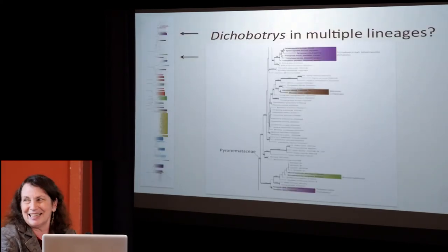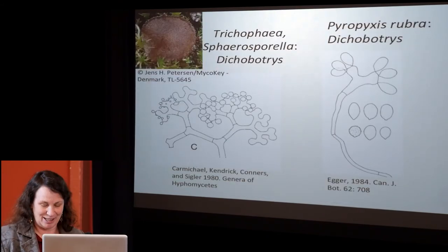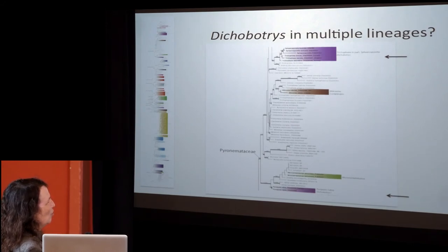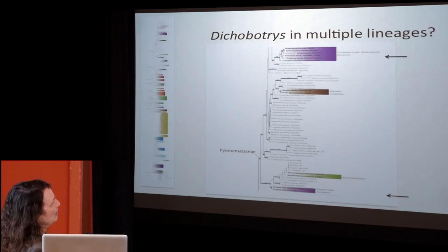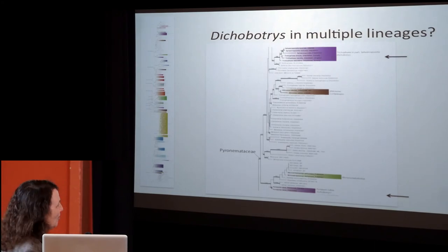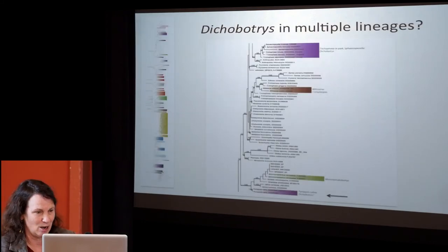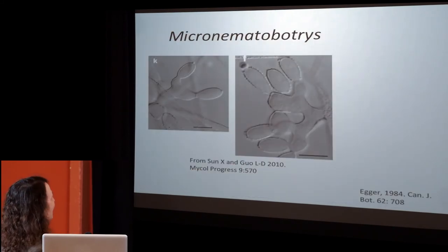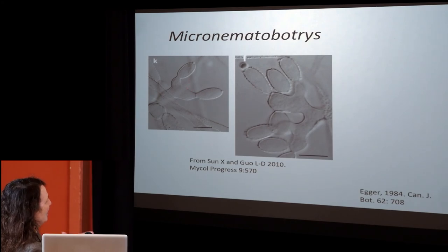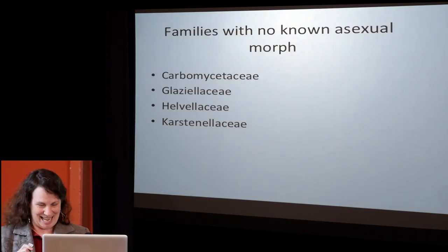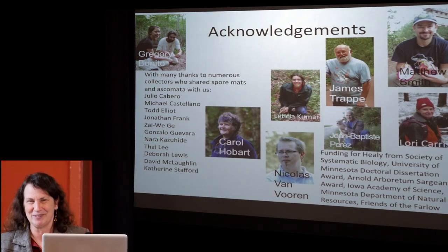There was a question about whether Dicobotris could be in two disparate lineages — one producing Trichophea or Trichophea spherosporella, and the other having Pyropixis. Trichophea spherosporella has spores that are smooth, while Pyropixis has spores that are varicose. Looking at that green lineage, it's Micronematobrotris, which actually looks very similar to Pyropixis — which helps to make more sense of the Dicobotris situation. And now I will stop, except to put up my acknowledgement slide of all the people who helped with this. Thank you very much.